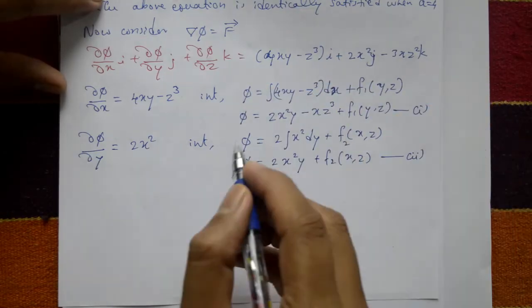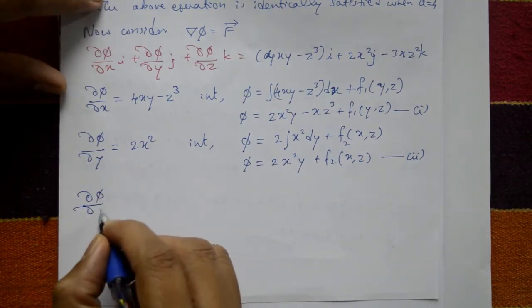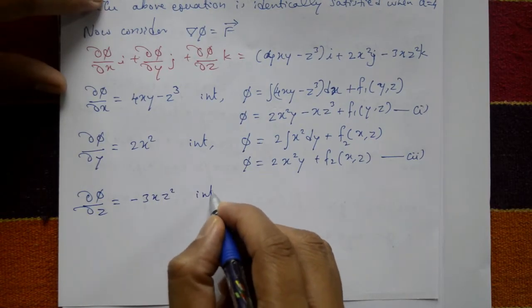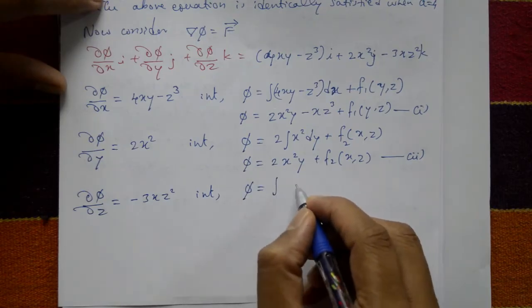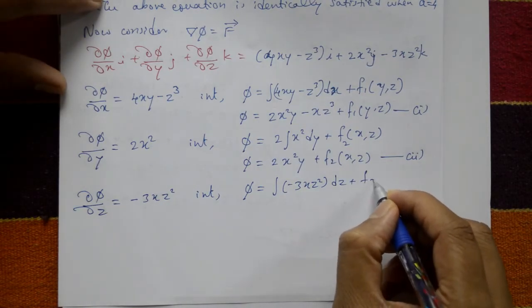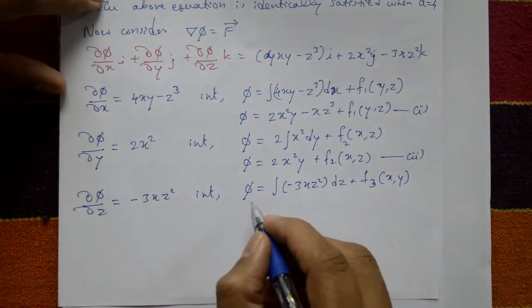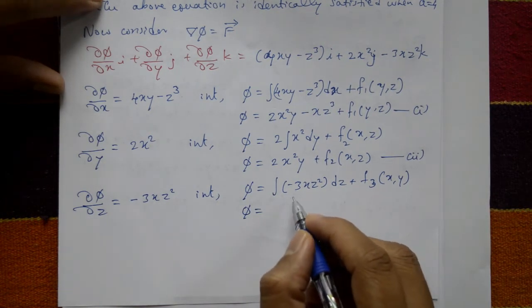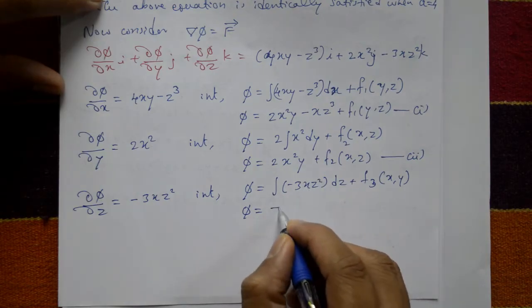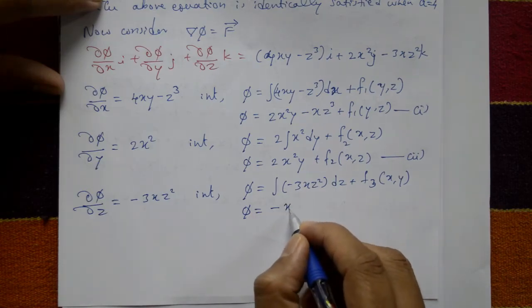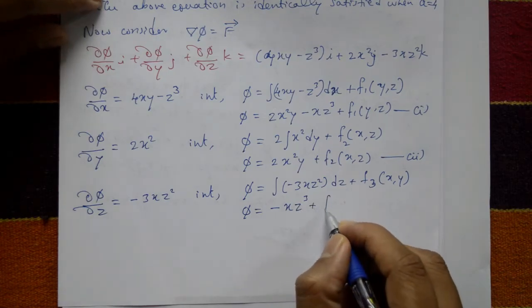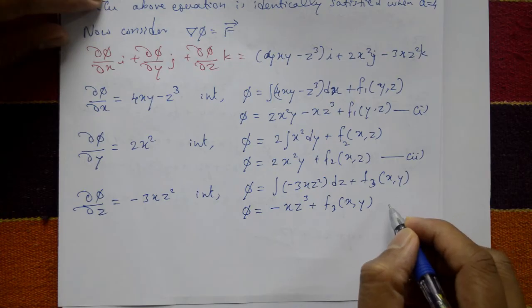Taking the coefficient of k on both sides: del phi/dz equals minus 3xz squared. Integrating with respect to z: phi equals minus xz cubed plus f3(x, y), where f3 is an arbitrary function. This is equation number 3.